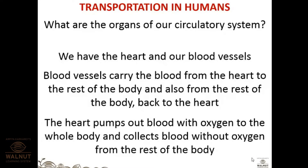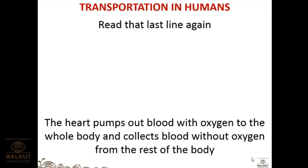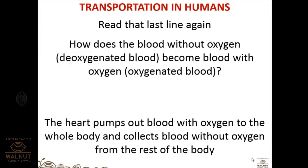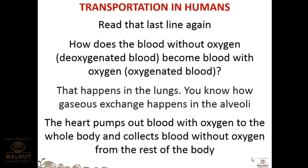How does deoxygenated blood become oxygenated? This process takes place in the alveoli — balloon-like structures in the lungs. The heart is a pumping organ; it will not purify blood — for purification you send it to the lungs, specifically the alveoli. The large surface area of alveoli enables efficient exchange of gases.